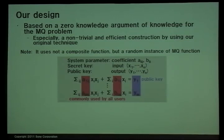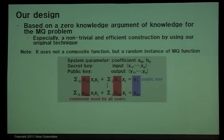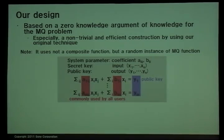So we employ a totally different design. Our design is based on a zero-knowledge argument of knowledge for the MQ problem. Of course, there is a trivial construction of such a protocol for any MQ language. But especially, our design is based on a non-trivial and efficient construction using our original technique. We note that it uses not a composite function, but a random instance of MQ function. In this design, the coefficients of the MQ function can be commonly used by all users. So a secret key is an input of the MQ function, and a public key is the output of the function.